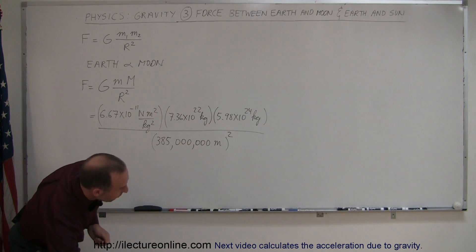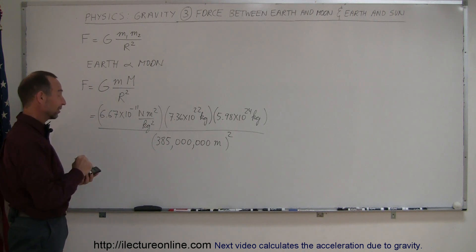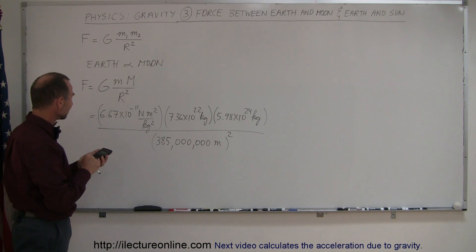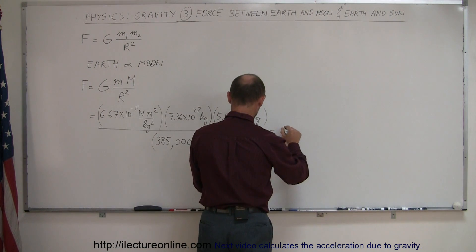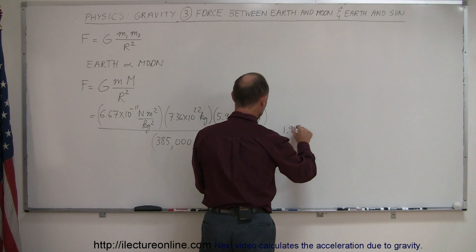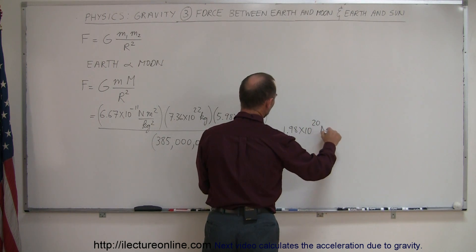Now we're going to need a calculator. Those are quite big numbers, although we used to do that on the slide rule. 6.67 e to the minus 11 times 7.36 e to the 22nd times 5.98 e to the 24th divided by 385 e to the 6th squared equals, and there's the force: it is equal to 1.98 times 10 to the 20th Newtons.